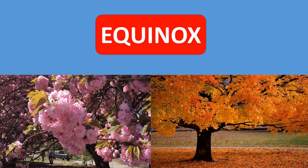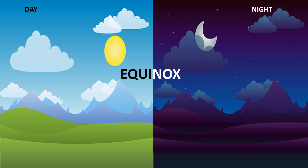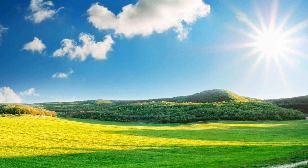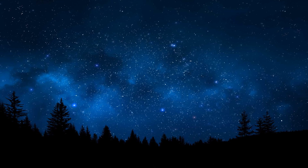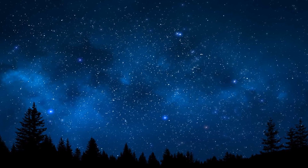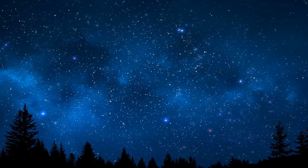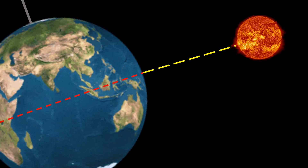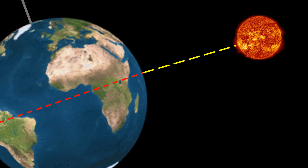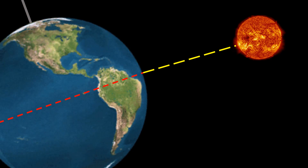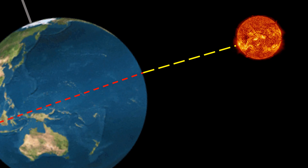On the equinox, night and day are nearly the same length — 12 hours of day and 12 hours of night all over the world. On the equinoxes, the tilt of the earth's axis is perpendicular to the sun's rays and the sun shines directly on the equator.